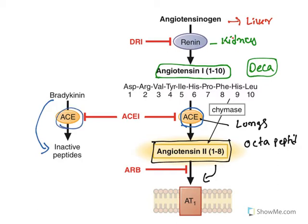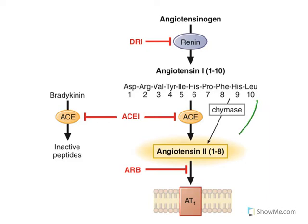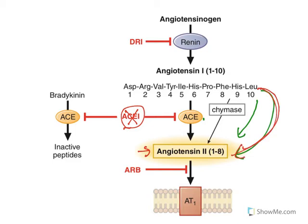There are important classes of drugs which will inhibit every step of this process. First, direct renin inhibitors inhibit renin. Next, ACE inhibitors — angiotensin converting enzyme inhibitors — inhibit the ACE enzyme. Third, ARBs, angiotensin receptor blockers, block these receptors. Additionally, there is an independent chymase pathway, independent of the ACE enzyme, by which angiotensin I is converted to angiotensin II. So even if we use ACE inhibitors, they will not completely stop the formation of angiotensin II — this independent pathway will still synthesize a certain amount of angiotensin II.